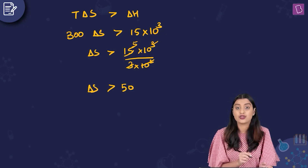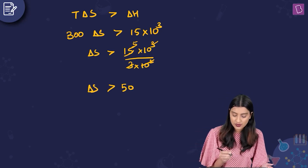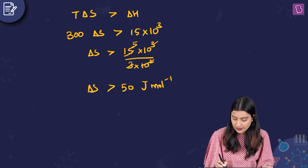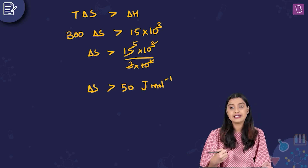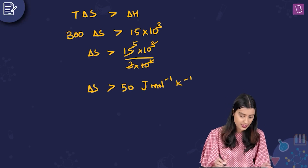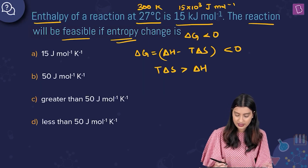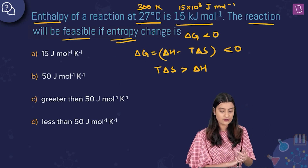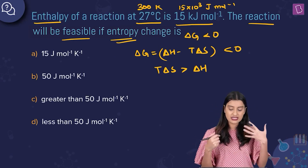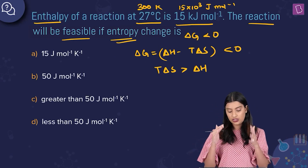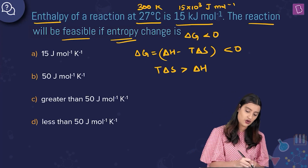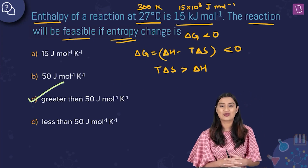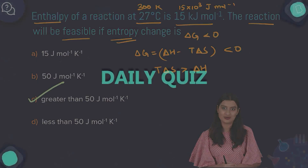The units work out as joule mol⁻¹ K⁻¹ (since ΔH in J/mol divided by temperature in K). So ΔS must be greater than 50 J per mol per Kelvin. Option C is the right answer.